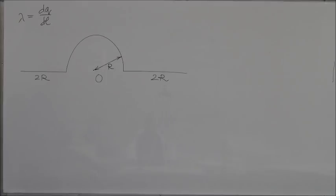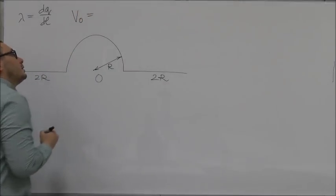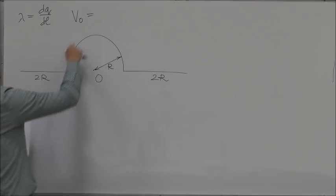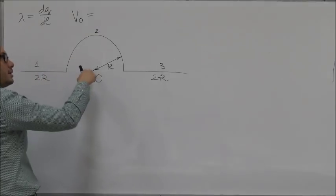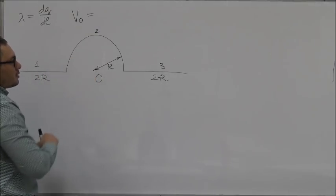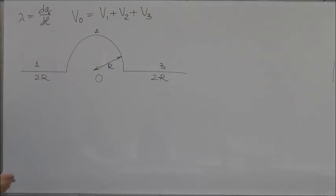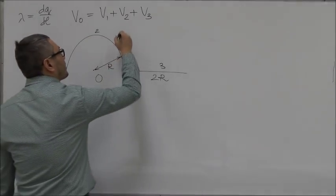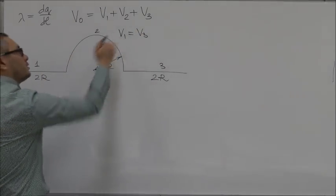The electric potential at point O can be considered as the sum of electric potentials due to three elements: first, second, and third. So V0 is equal to V1 plus V2 plus V3. Just from the geometry of the problem, you can see that the electric potential due to the first element is the same as due to the third one, so V1 and V3 are actually the same.